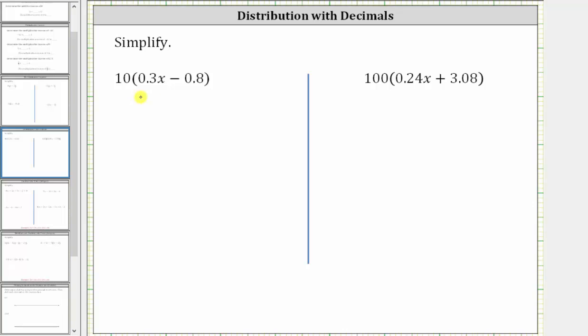For the first expression, we have 10 times the quantity 0.3x minus 0.8. To clear the parentheses, we distribute 10, which means we multiply 10 by both terms inside the parentheses.